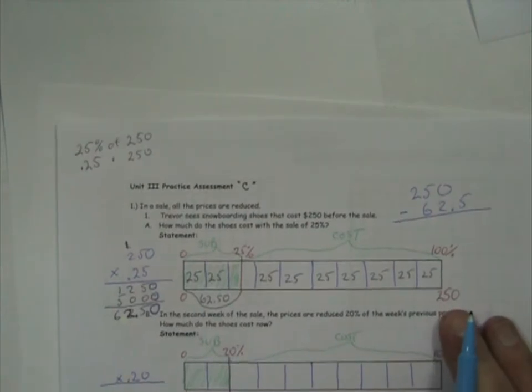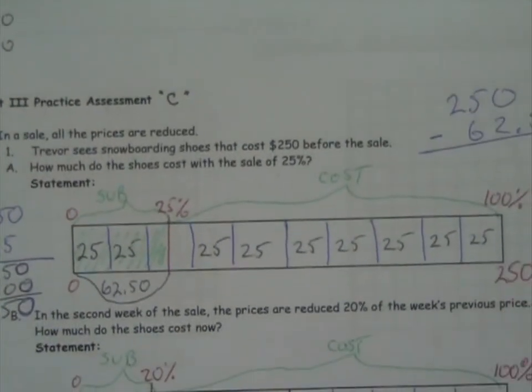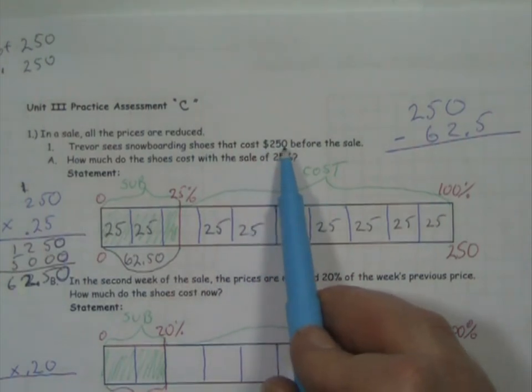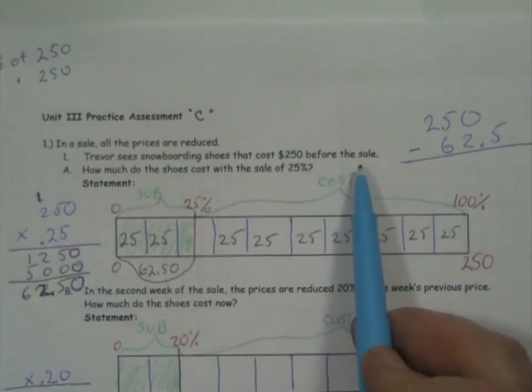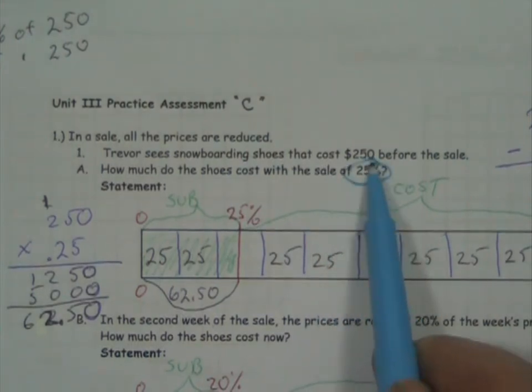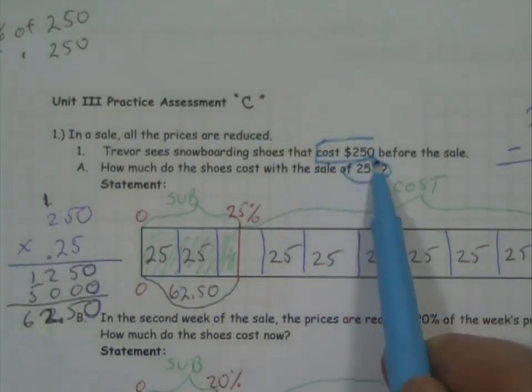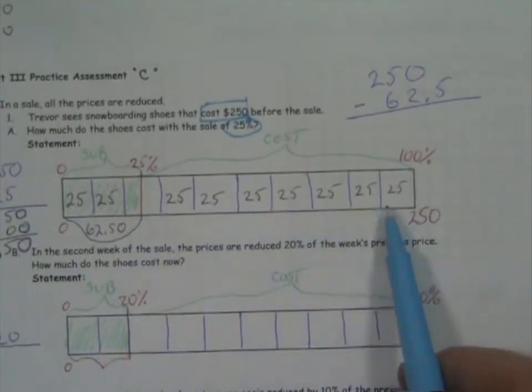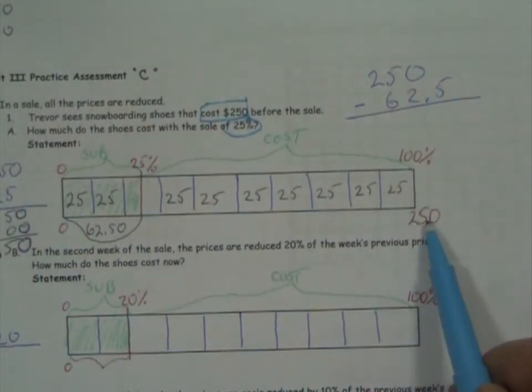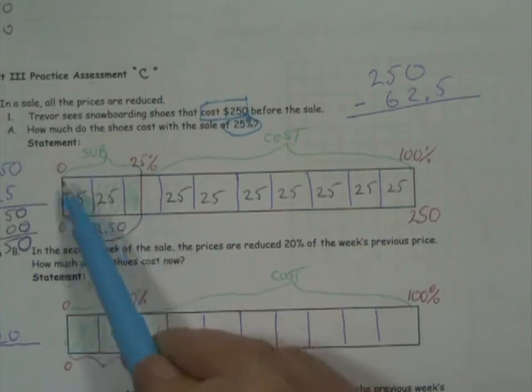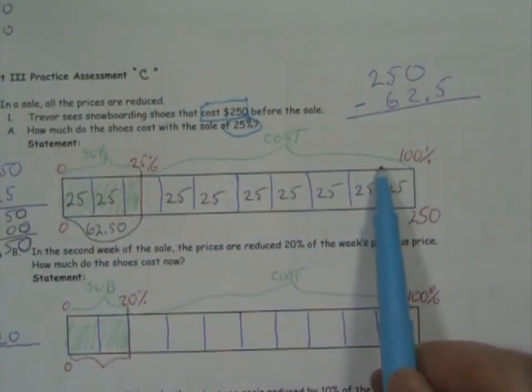Now turning the paper over to the back side. You can see I've already, we did this in class. The question says Trevor sees snowboarding shoes that cost $250 before the sale. And it says, how much do the shoes cost with the sale of 25%? So they cost $250 at first, and then they're going to go on sale 25%. What's it going to cost? I have my model here. It's $250. That means each one of these is going to be 25. That's 10%. This is what I'm going to subtract, 25% of it. And this is what it's going to cost me, whatever's left.